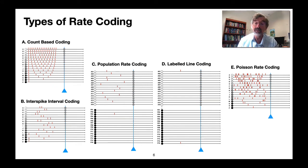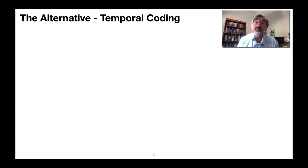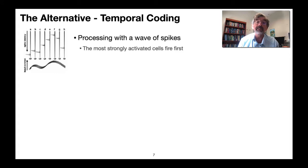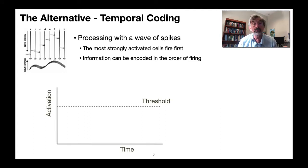I will argue that all of these are actually very inefficient coding schemes and there's a perfectly good and simple alternative which is using temporal coding. That's the idea that you process information using a wave of spikes. Here we've got a series of neurons and an intensity profile and the most strongly activated neurons fire first, allowing you to code information in the order of firing of the neurons. And this follows from a very simple bit of neurophysiology: a sensory neuron is effectively like a capacitor with a threshold.